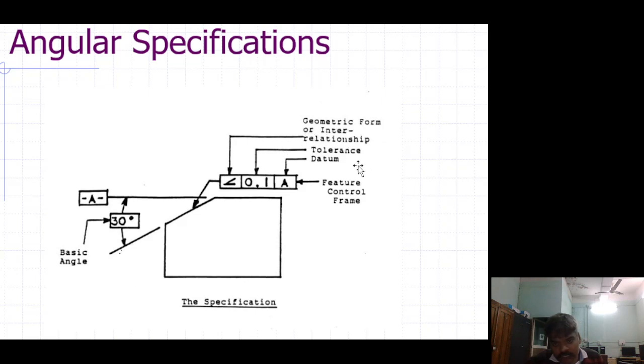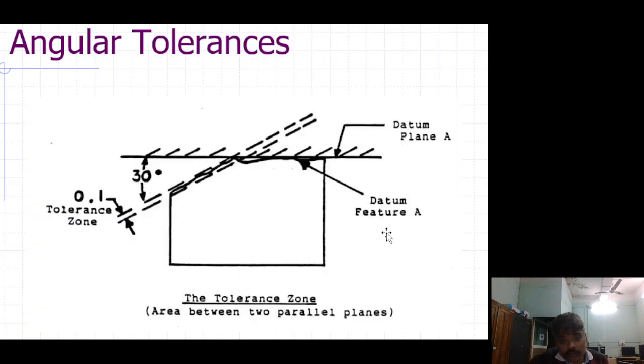Geometric form of inter-relationship, tolerance, datum, feature control frame, angular tolerance. Area between two parallel planes, 30 degrees, 0.01, tolerance zone.